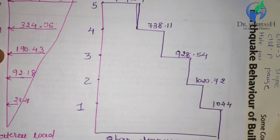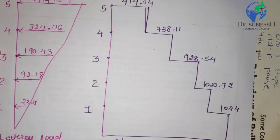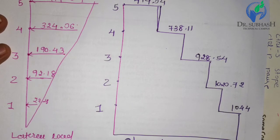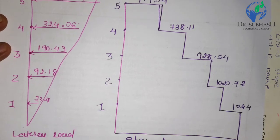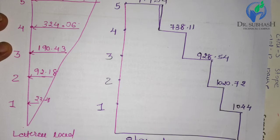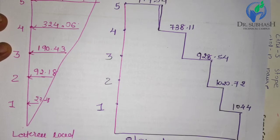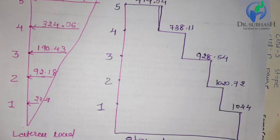This completes the last step of the previous example: distribution of base shear and drawing the lateral load diagram and shear force diagram. The seismic coefficient method is very important — it finds the base shear of different stories and distributes it floor-wise, which is useful for finding lateral loads from earthquake loading. We now move forward to the next example on different types of earthquake-resistant buildings.